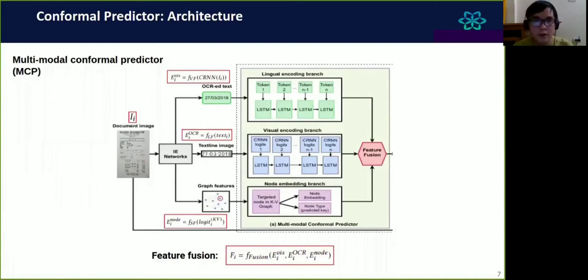Let's move on to the details of the architecture for the conformal predictor. Basically, it is the multi-modal conformal predictor, MCP. MCP consists of three different branches: local encoding branch, visual encoding branch, and graph embedding branch. Based on the motivation, the conformal predictor has three branches. Each processes one input data that comes from different sources of data, where the input data is extracted from the IE networks, specifically the hidden layers of the IE networks. The input for the local encoding branch is the output of the OCR model, which is the OCR text, and the output will be a vector.